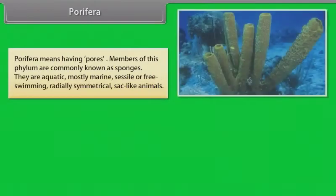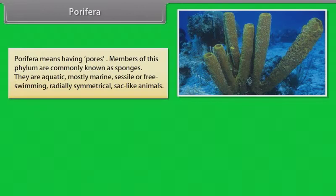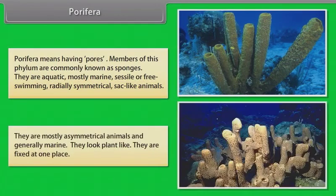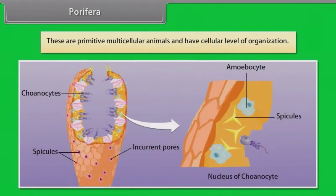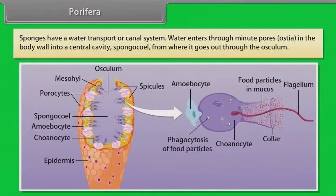Porifera means having pores. Members of this phylum are commonly known as sponges. They are aquatic, mostly marine, sessile or free-swimming, radially symmetrical, sack-like animals. They are mostly asymmetrical, generally marine, and look plant-like — fixed at one place. These are primitive multicellular animals with cellular level of organization. Sponges have a water transport or canal system. Water enters through minute pores known as ostia in the body wall into a central cavity called the spongocoel, from where it goes out through the osculum.